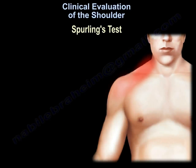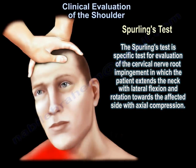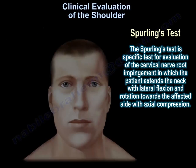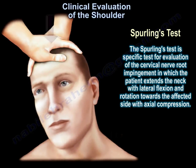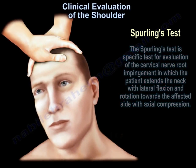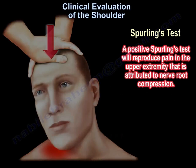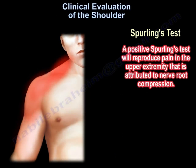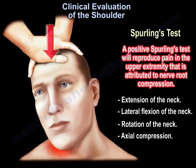You may want to use the Spurling test, which is a specific test for evaluation of cervical nerve root impingement. The patient extends the neck with lateral flexion and rotation towards the affected side, with axial compression. A positive test will reproduce pain in the upper extremity attributed to nerve root compression.